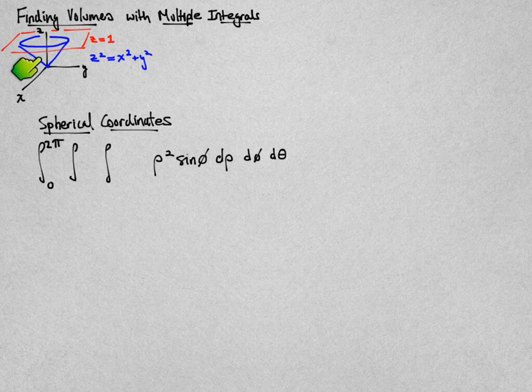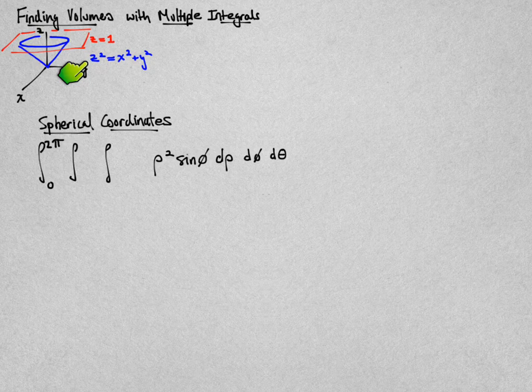In this video, we'll find the volume of the region between the blue cone, z squared equals x squared plus y squared, and below the red plane, z equals 1.